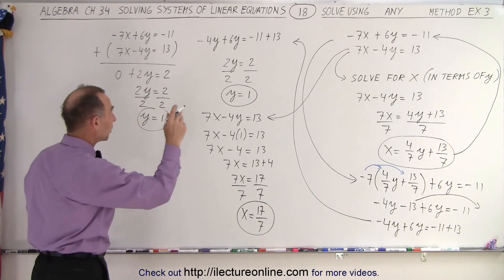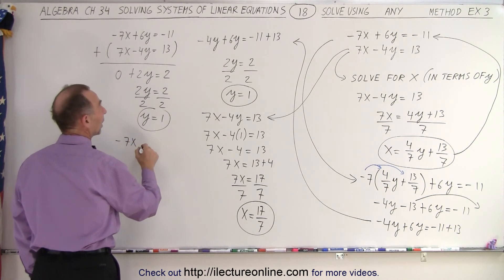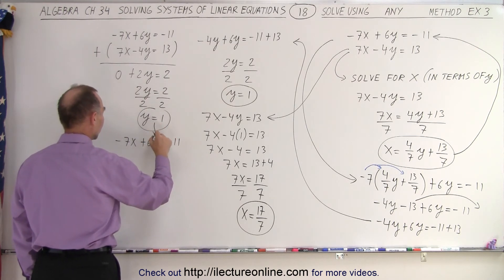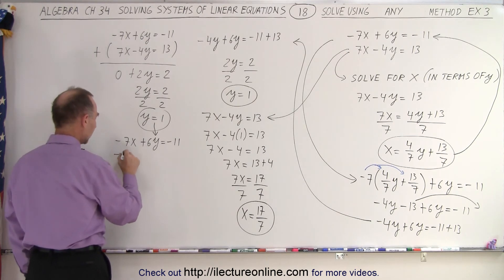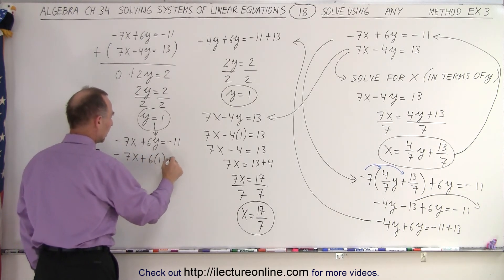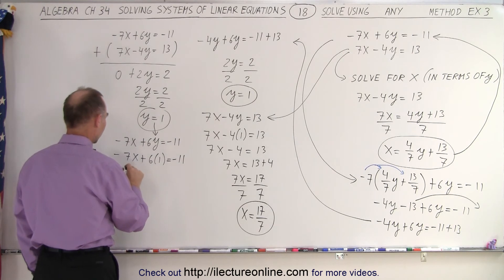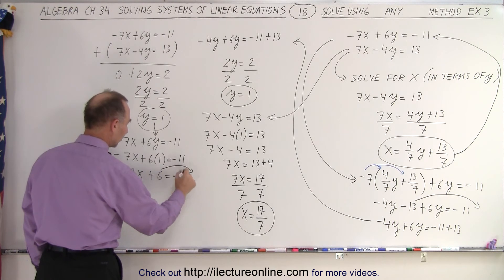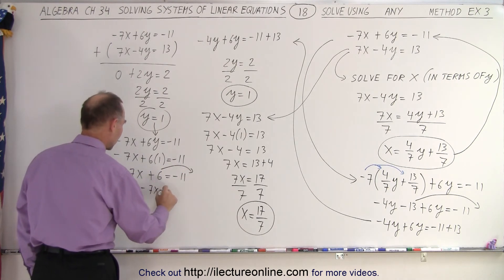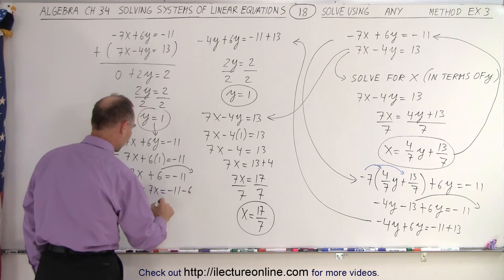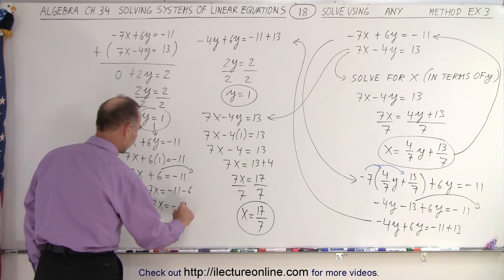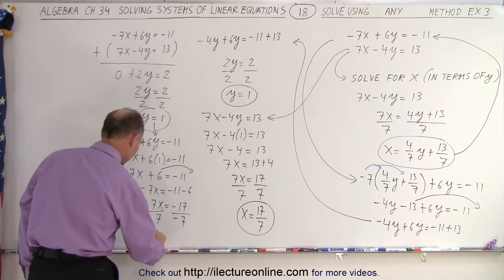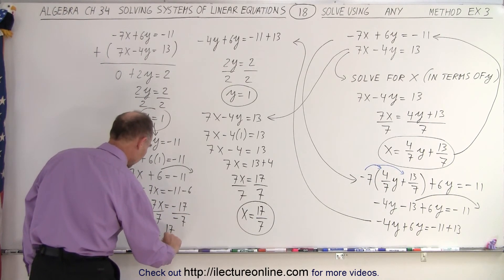Let me plug it into the other equation to see what we get. So minus 7x plus 6y equals minus 11. I'm going to plug this into here. Minus 7x plus 6 times 1 equals minus 11. So minus 7x plus 6 equals minus 11. Now I'm going to move the 6 over to the other side. Minus 7x equals minus 11 minus 6, or minus 7x equals minus 17. Now divide both sides by a negative 7. And I get x equals 17 over 7.